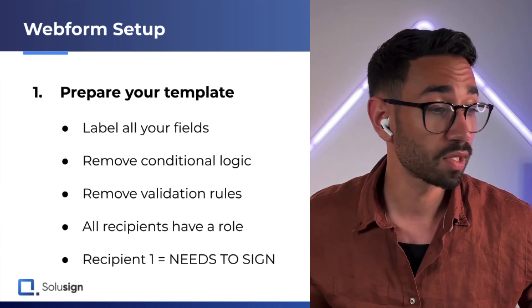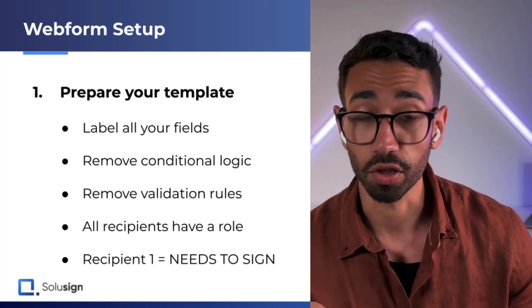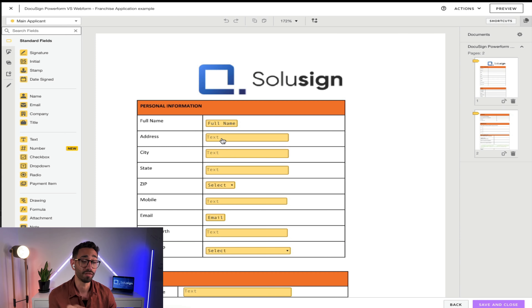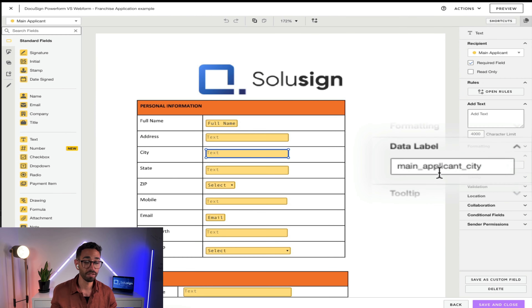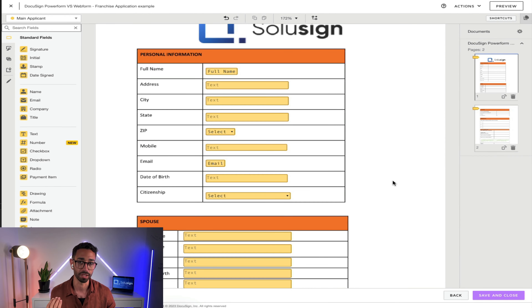Now let's look at how to set up the webform. Since webforms are template-based like a PowerForm, you'll first have to set up a template and prepare it for webform compatibility. This means giving a meaningful name to all your fields, then removing all conditional logic and validation rules from the fields in your template. I recommend making a copy of your template first so you don't lose all the validation and conditional logic rules in case the setup fails — this happened to me and I had to rebuild everything from scratch.